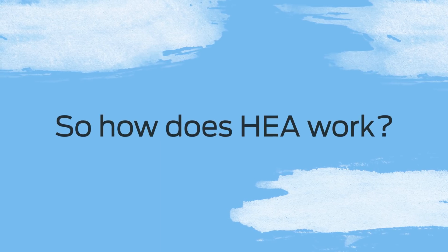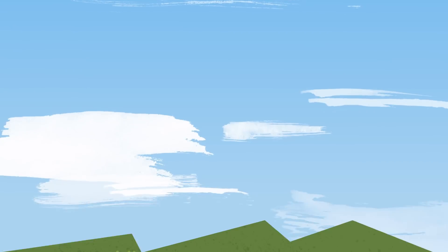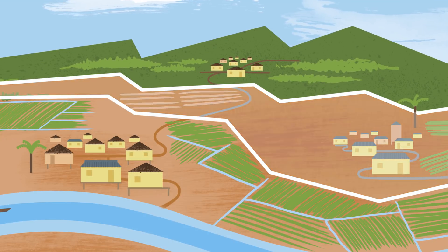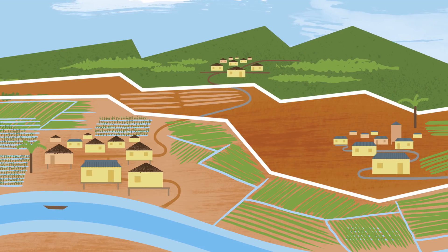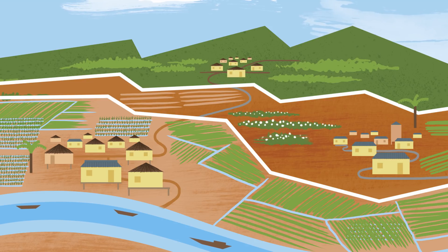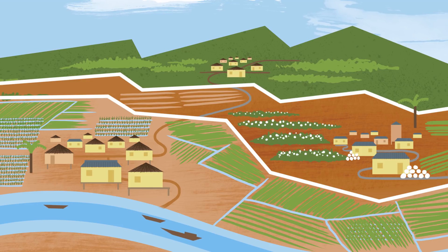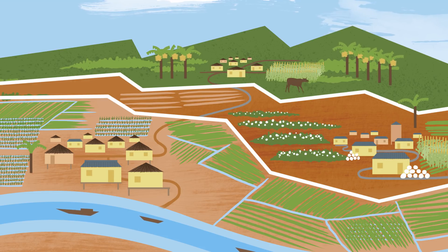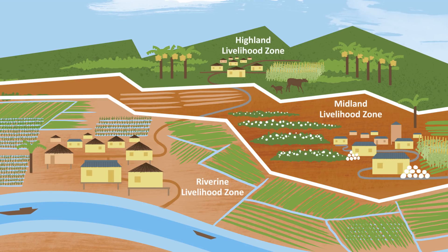So how does HEA work? We start by dividing areas into distinct geographic zones within which people live in more or less the same way. In this example, households along the river have a different means of production and different market interactions from those inland, where the soils are poor and rainfall is erratic. The production and market system is again different in the hills, where rainfall is higher and soils more fertile. We call these different areas livelihood zones, and we do field work in each separately.